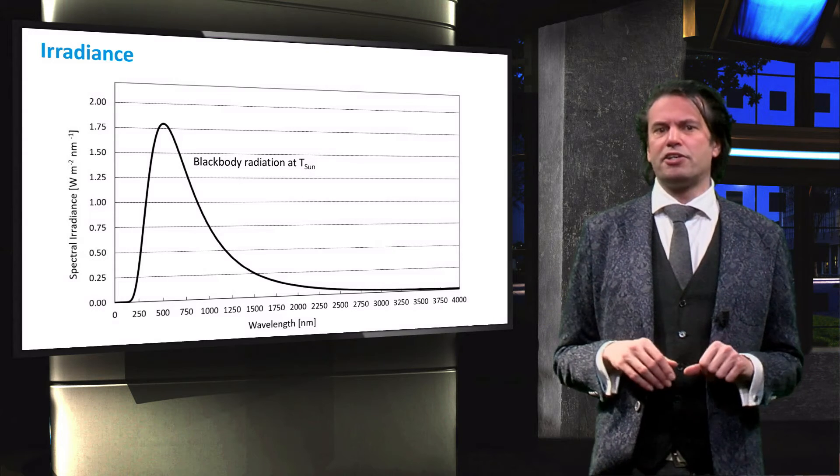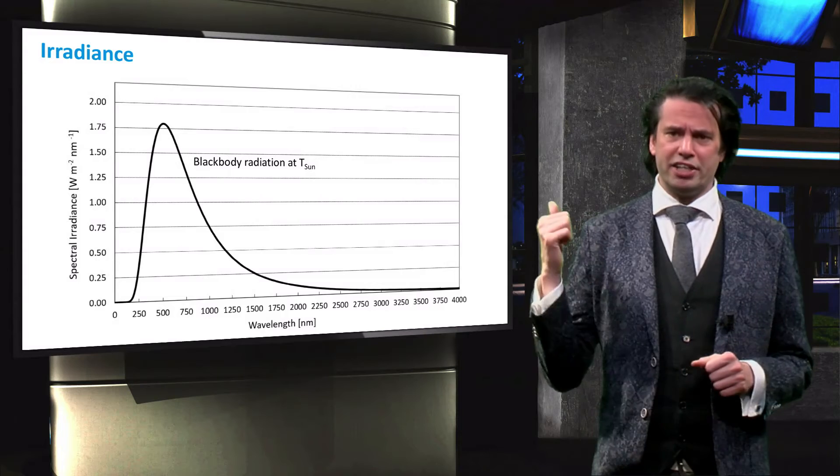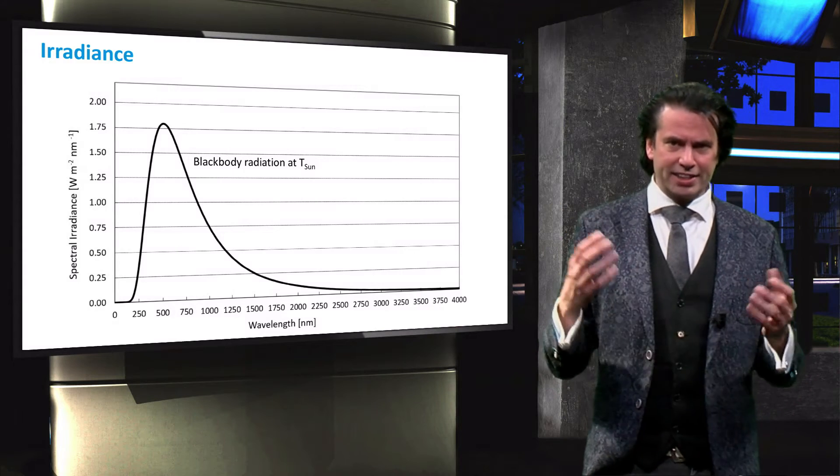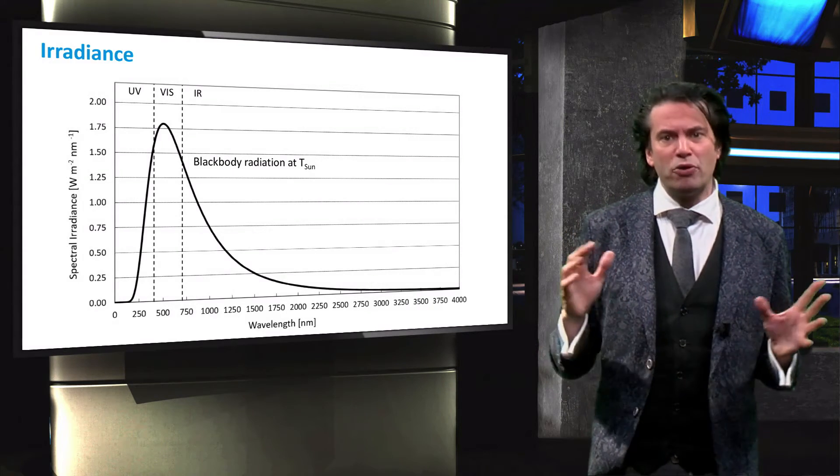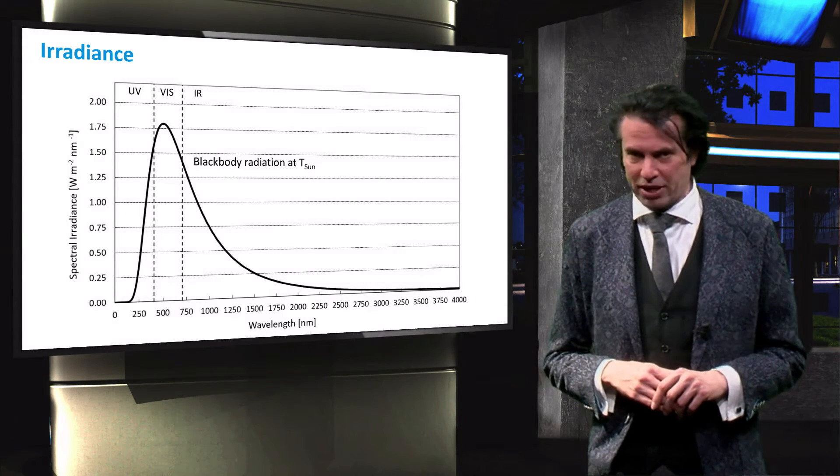The spectral radiance of the Sun on Earth, as described by Planck's law, is shown in this figure. The dashed lines indicate the boundaries of the ultraviolet, visible and infrared part of the spectrum.